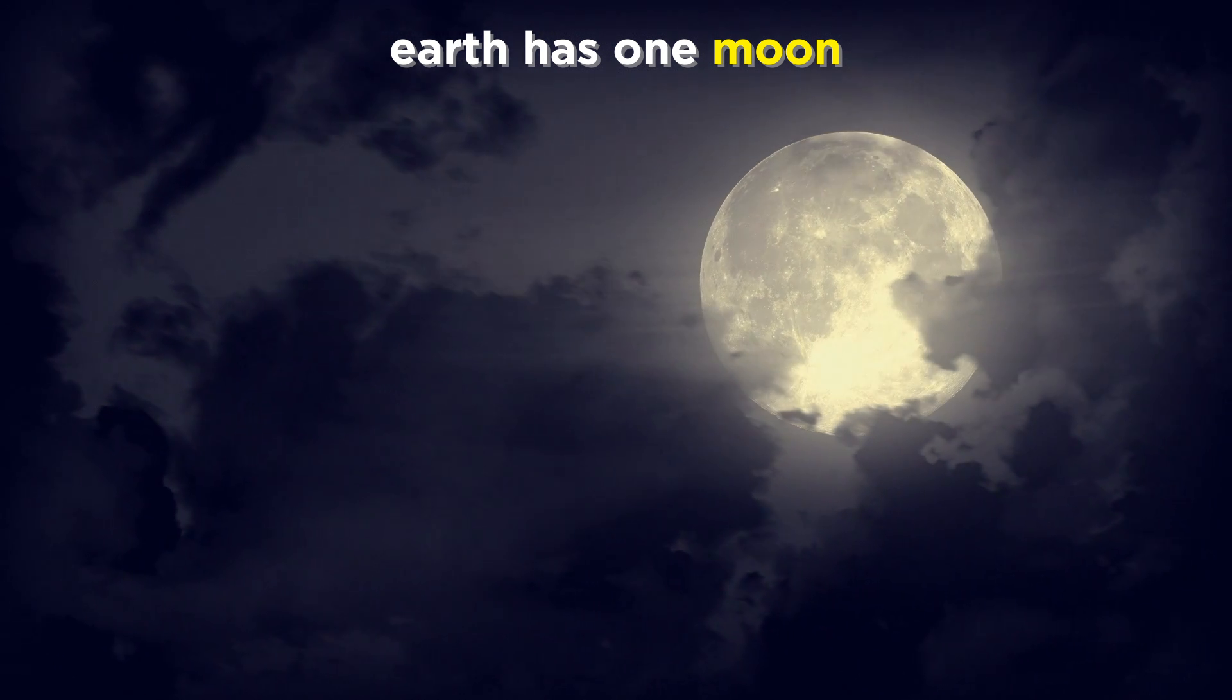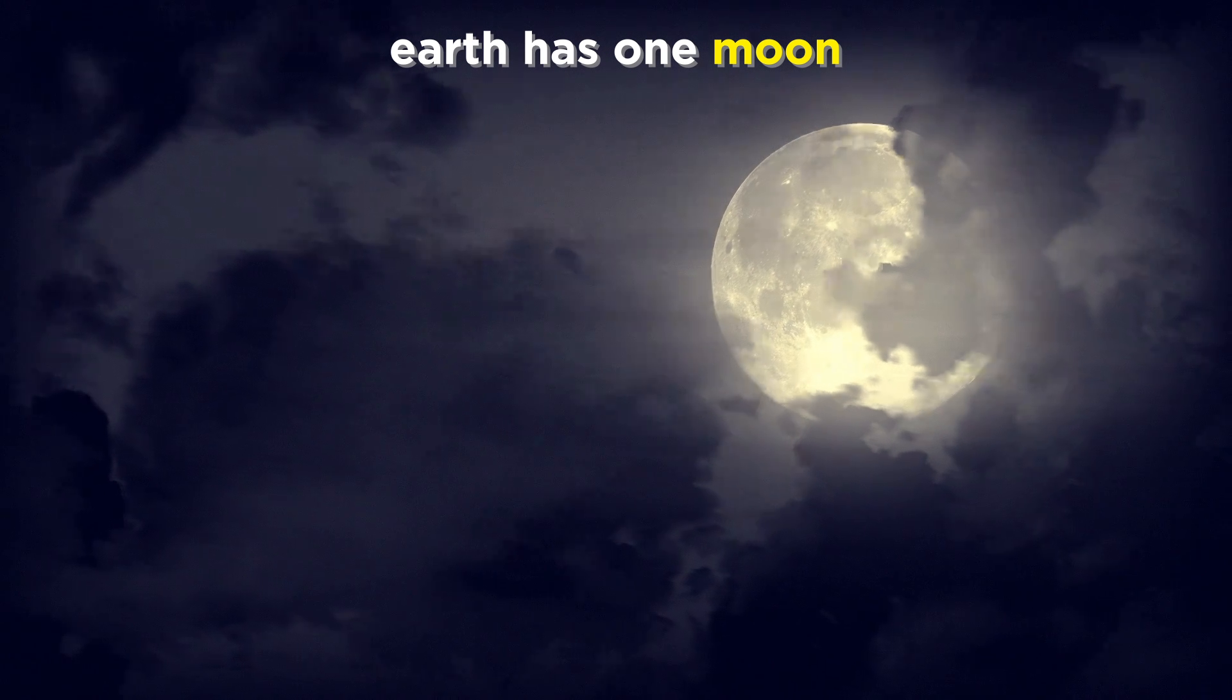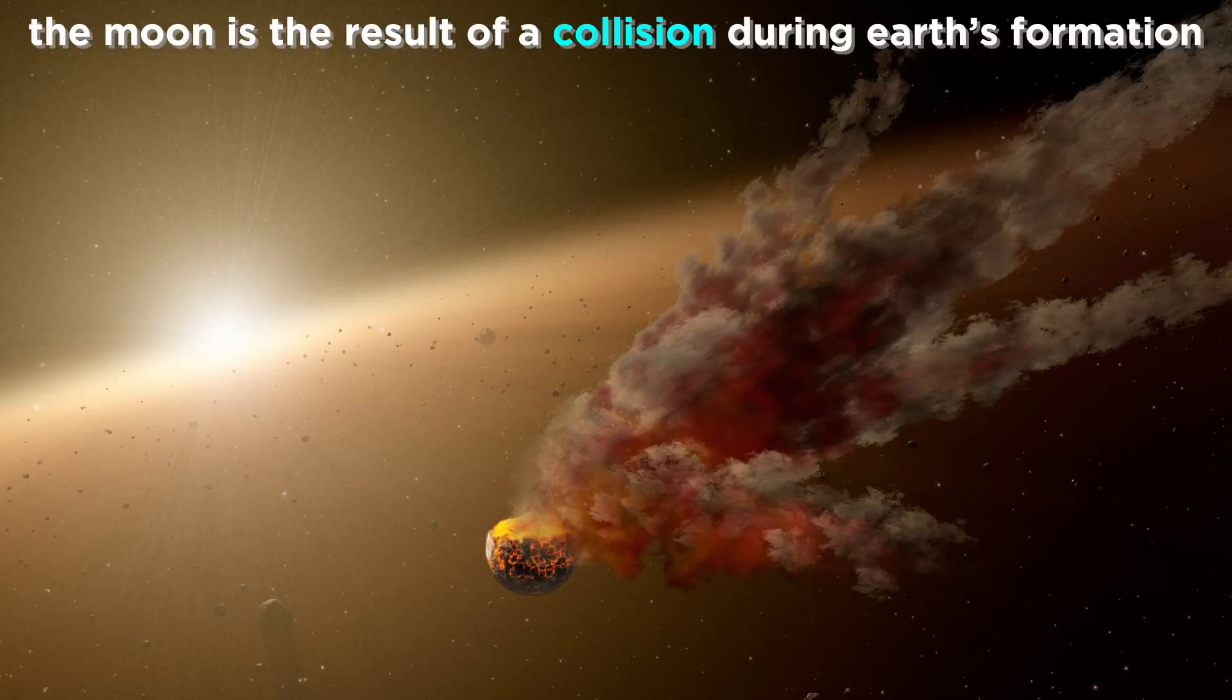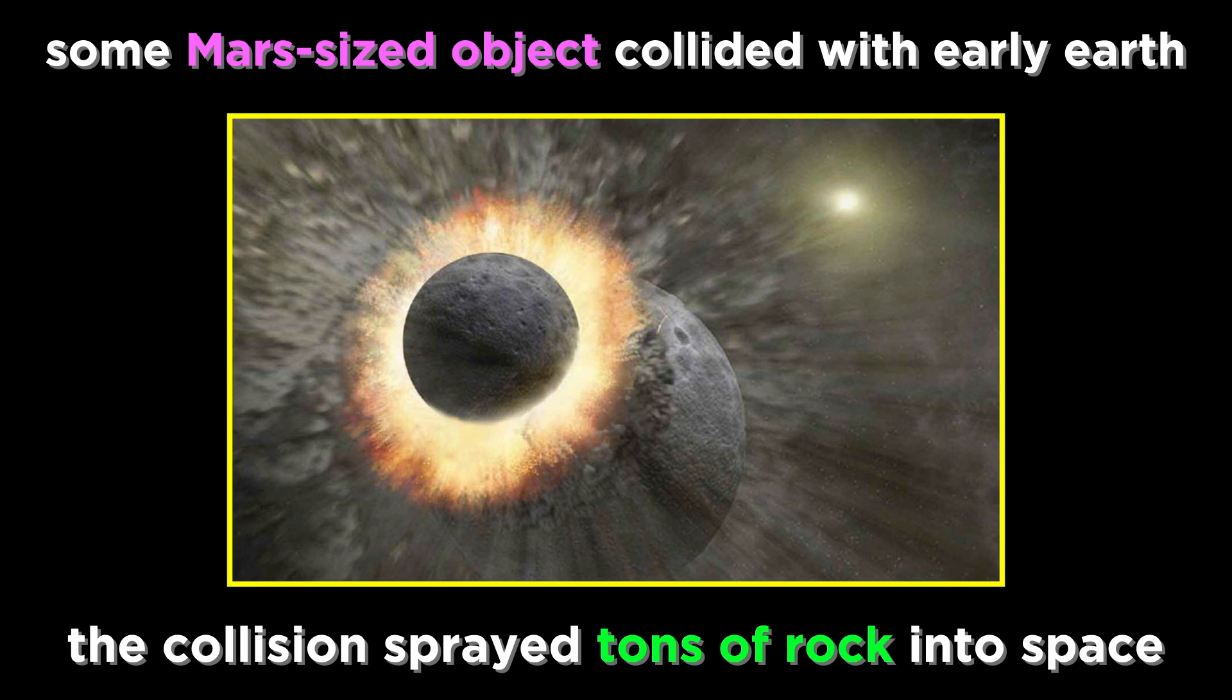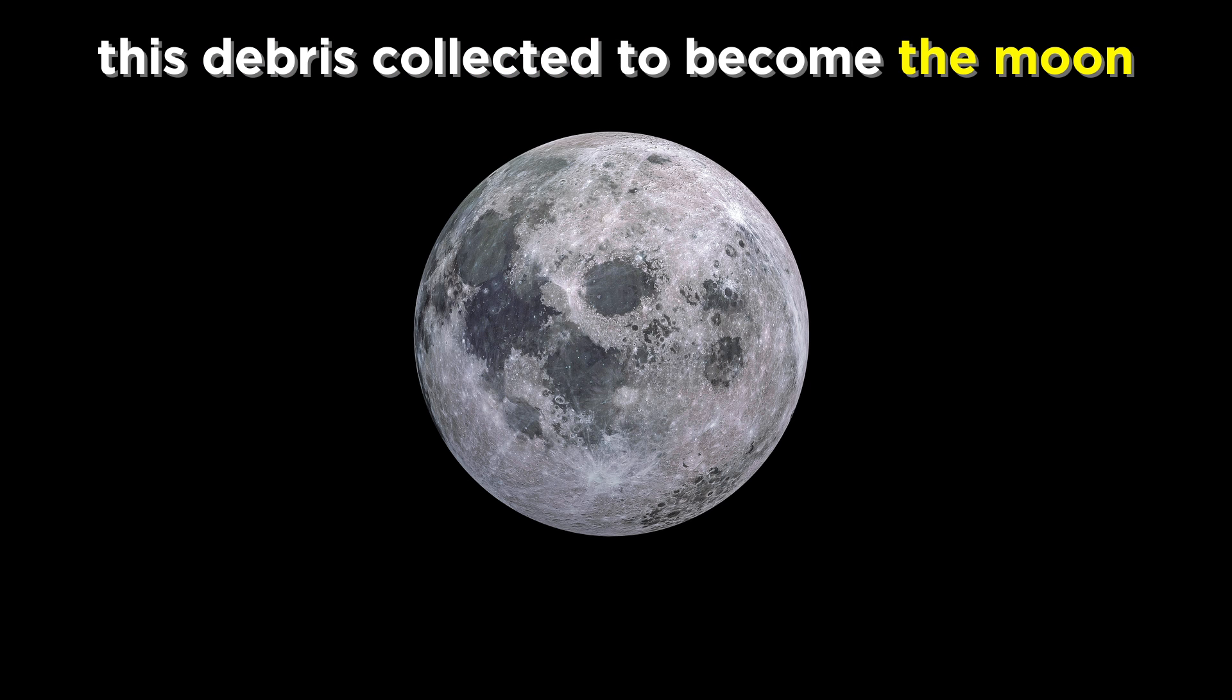Earth has just one moon, visible as the most prominent feature of the night sky. The evidence is very clear in suggesting that the moon is the result of a collision between two huge planetesimals in the early stages of Earth's formation. One of these was to become the Earth, and the other must have been a Mars-sized object, and when these two objects crashed into one another, enormous amounts of rock were splashed up into space. This debris, gravitationally bound to the Earth, eventually collected to become the moon, just the way all the planets initially formed.